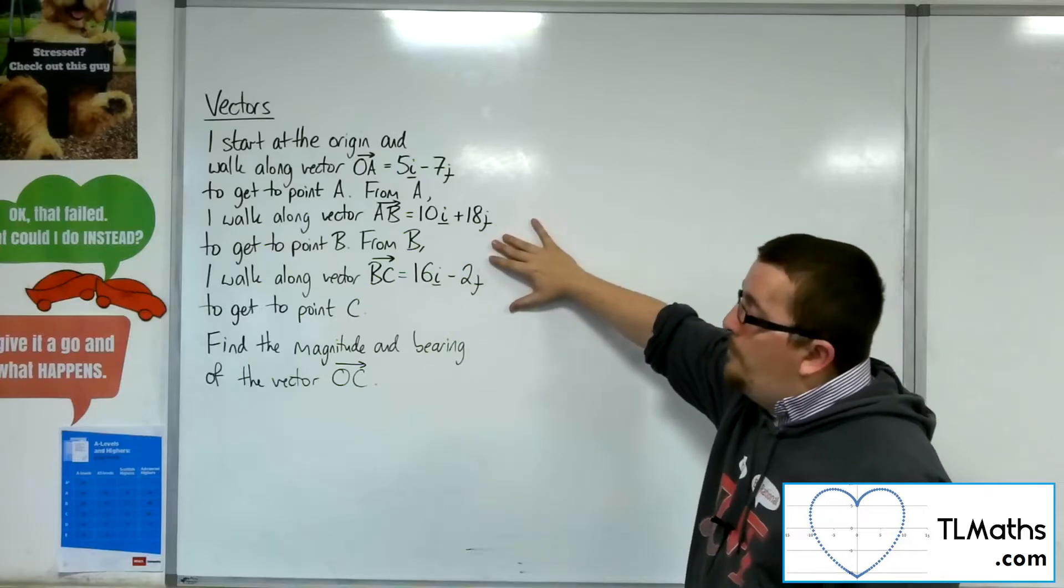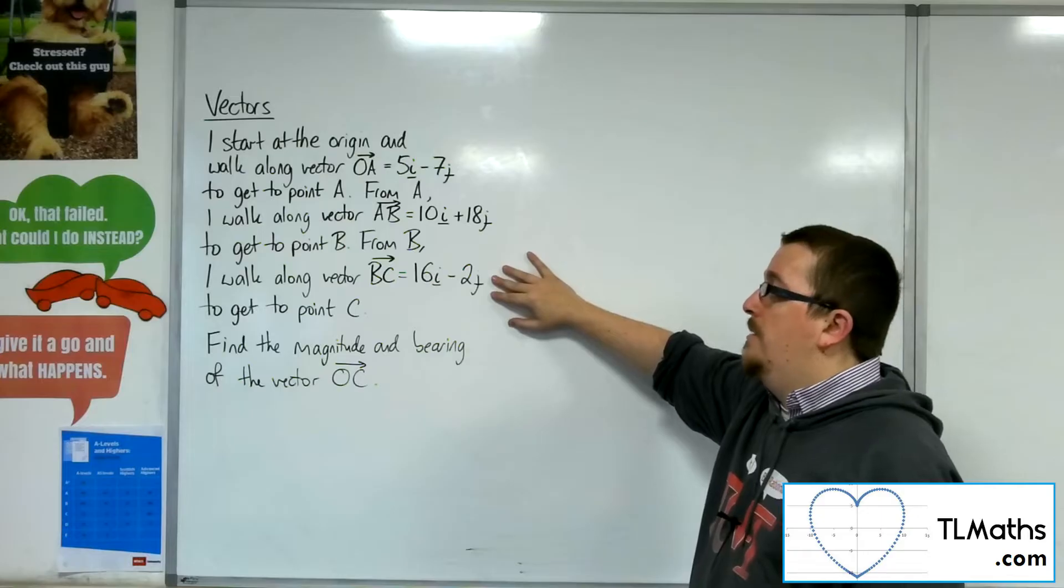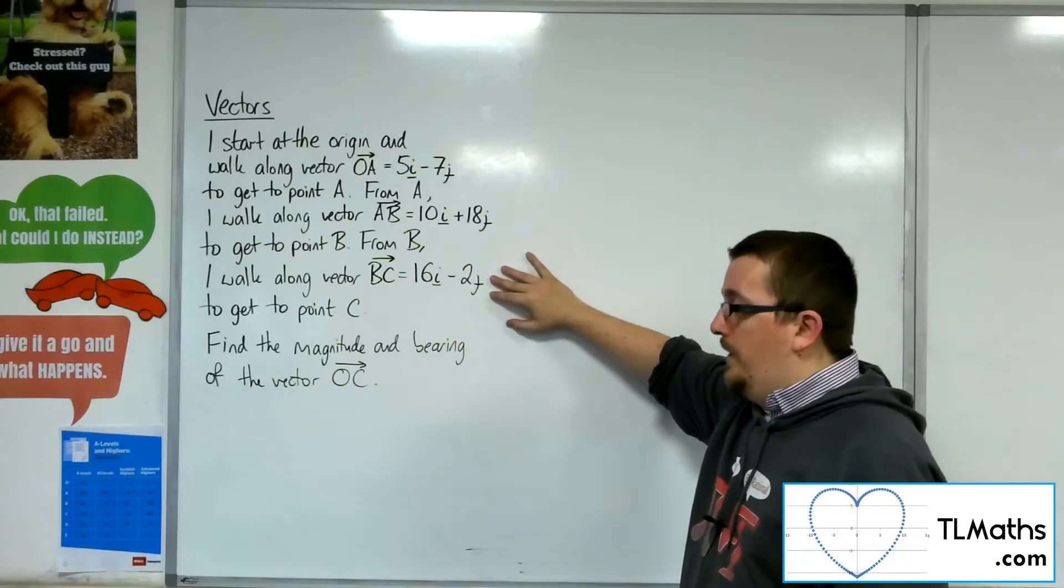And then from B, I walk along vector BC, which is 16i minus 2j, to get to point C.